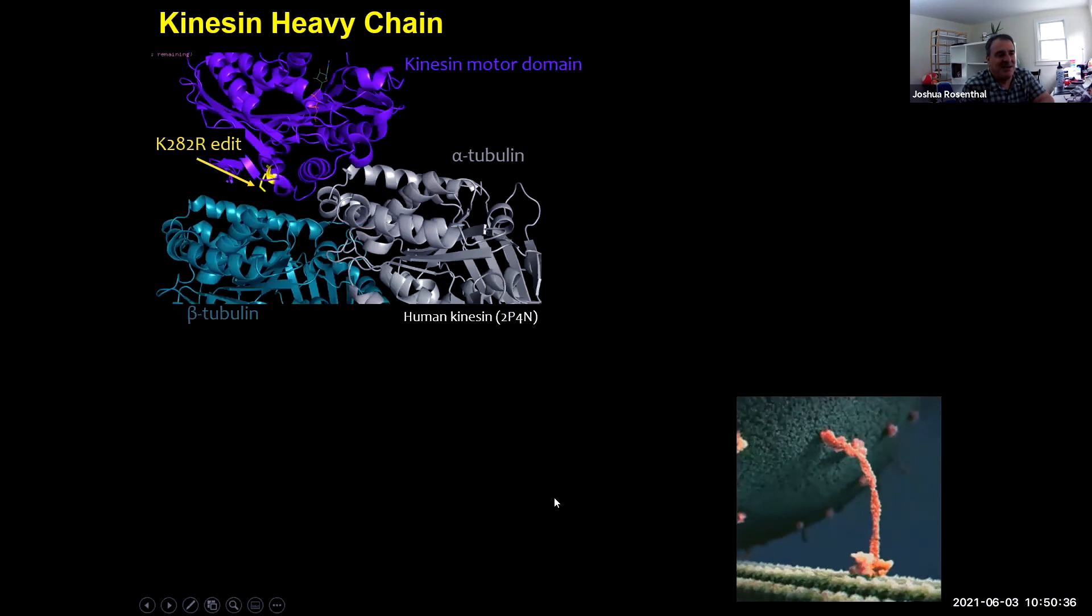Kinesin, you know, walks along microtubules by hopping between alpha and beta tubulin. The editing site is a lysine to an arginine change right here in the motor domain. It looks like the feet down here.